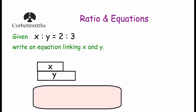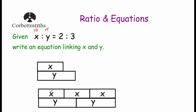Next example: given the ratio of x to y equals 2 to 3, write an equation linking x and y. X and y are numbers that simplify to 2 to 3, for instance x equals 10 and y equals 15 (divide both by 5 to get 2 to 3). If you multiply x by the y number in the ratio (3), and multiply y by the x number in the ratio (2), those products are equal. So if x equals 10 you get 30, and if y equals 15 you also get 30. The equation is 2y equals 3x.